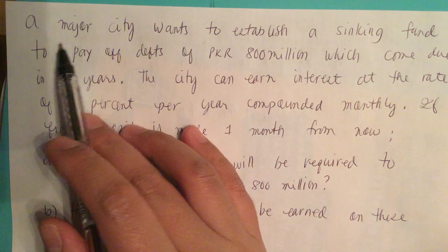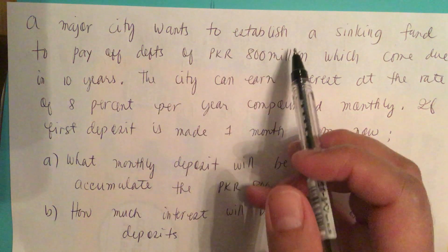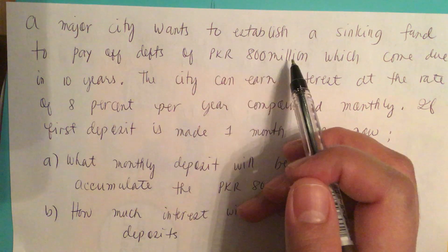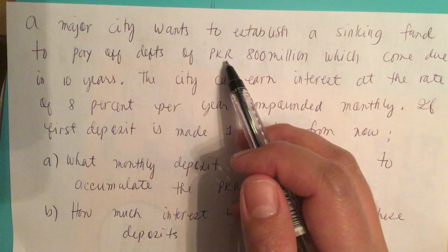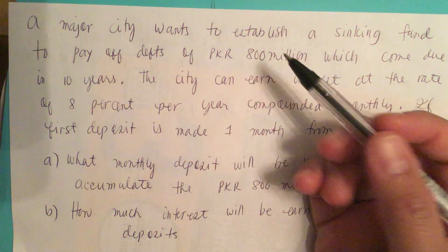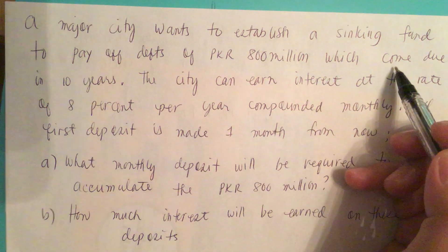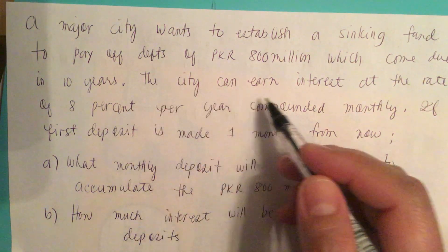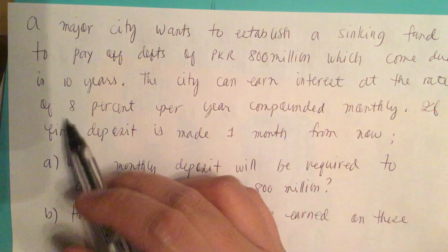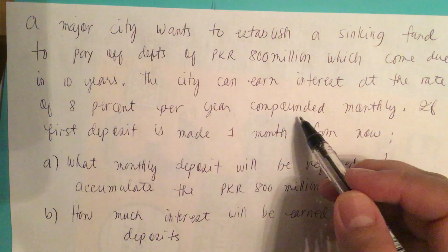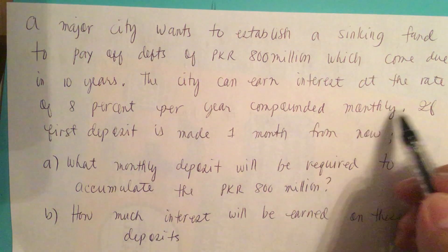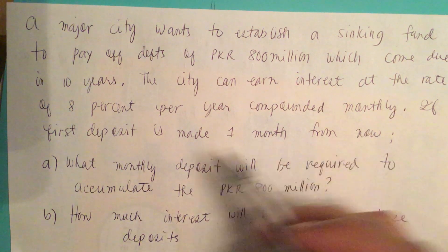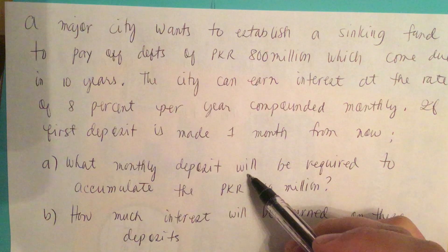A major city wants to establish a sinking fund to pay off debt of 800 million PKR, which comes due in 10 years. The city can earn interest at the rate of 8 percent per year compounded monthly. If first deposit is made one month from now: